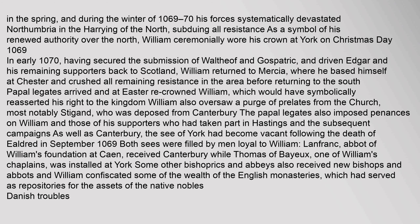In early 1070, having secured the submission of Waltheof and Gospatric and driven Edgar and his remaining supporters back to Scotland, William returned to Mercia, where he based himself at Chester and crushed all remaining resistance before returning to the south. Papal legates arrived and at Easter re-crowned William, symbolically reasserting his right to the kingdom. William also oversaw a purge of prelates from the church, most notably Stigand, who was deposed from Canterbury. The see of York had become vacant following the death of Ildred in September 1069; both sees were filled by men loyal to William. Lanfranc, abbot of William's foundation at Caen, received Canterbury, while Thomas of Bayeux, one of William's chaplains, was installed at York. William also confiscated some of the wealth of the English monasteries, which had served as repositories for the assets of the native nobles.